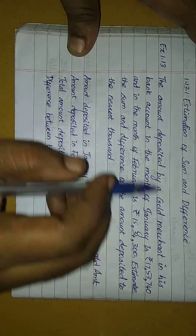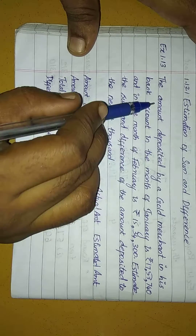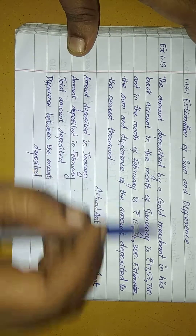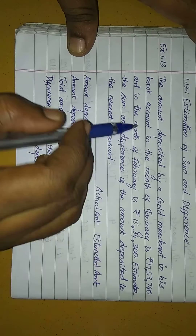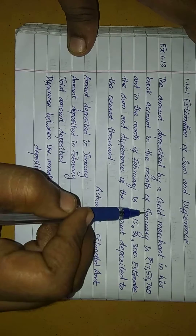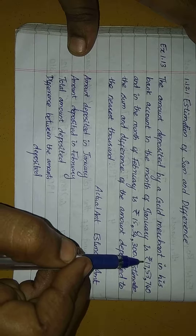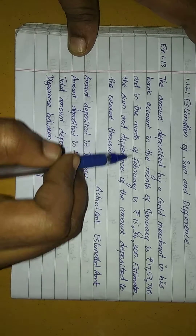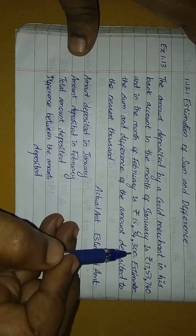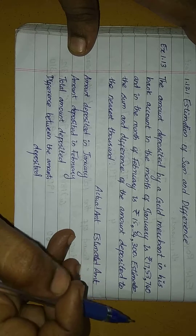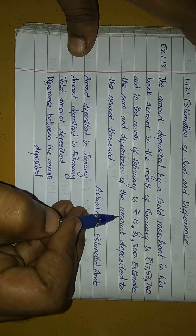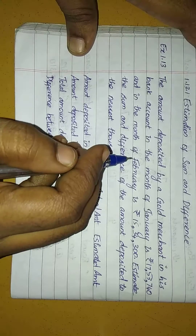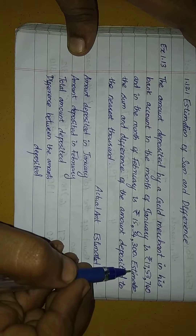There is an amount in the bank. Month of January is 17,53,740. February is 15,34,300. Estimate the sum and difference of the amount deposited to the nearest thousand.